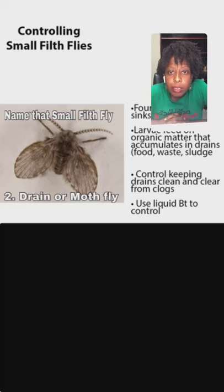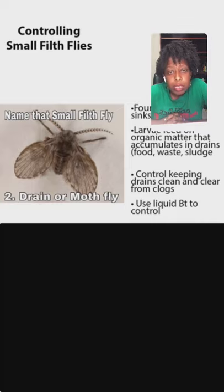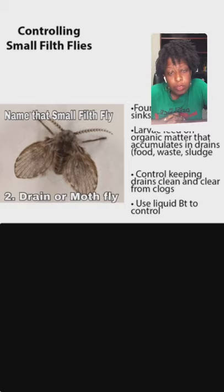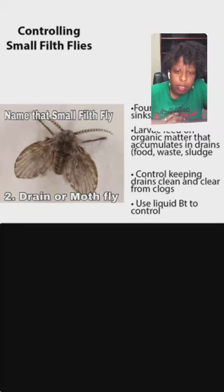Next we'll talk about drain flies, also called moth flies. You usually find these around drains, sinks, or leaking pipes. The adults look for drains that are dirty and have organic matter accumulated in them. If you have a garbage disposal in your sink and you don't regularly clean it out, you can attract drain flies — they'll lay their eggs in there and the larvae will eat the organic matter and sludge that builds up inside pipes.